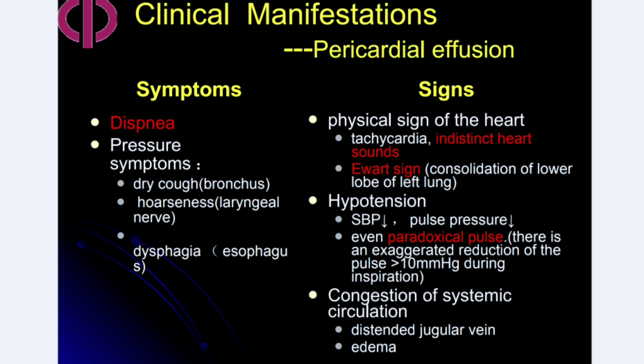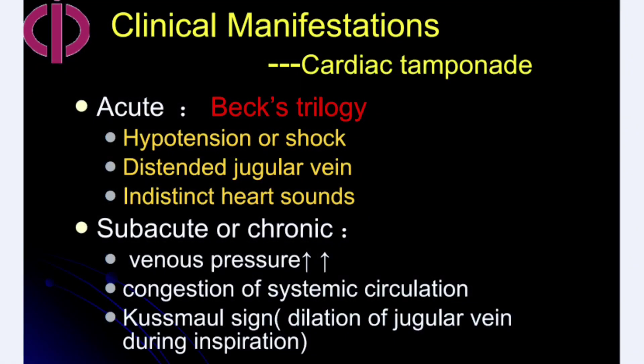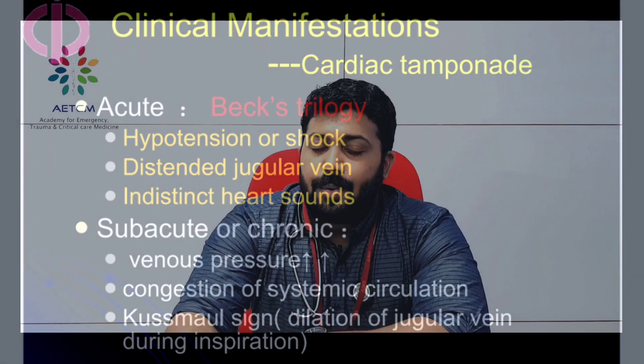Signs of systemic circulatory congestion include distended jugular veins and peripheral edema. When it progresses to cardiac tamponade, there is the classic Beck's triad: hypotension, distended jugular veins, and muffled heart sounds. In the chronic or sub-acute stage there is increased venous pressure, systemic congestion, and Kussmaul's sign — dilatation of the jugular vein during inspiration.